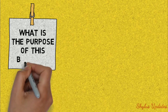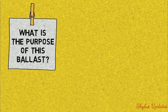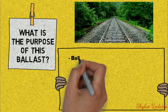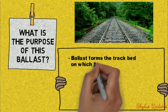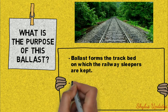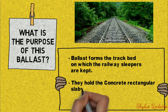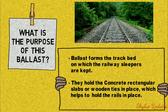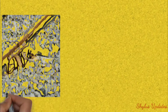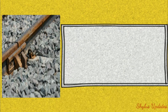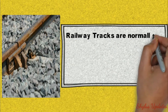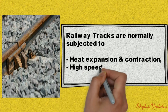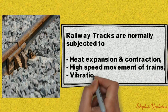What is the purpose of this ballast? Ballast forms the track bed on which the railway sleepers are kept. They hold the concrete rectangular slabs or wooden ties in place, which helps to hold the rails in place. Railway tracks are normally subjected to heat expansion and contraction, high-speed movement of trains, and also vibrations.